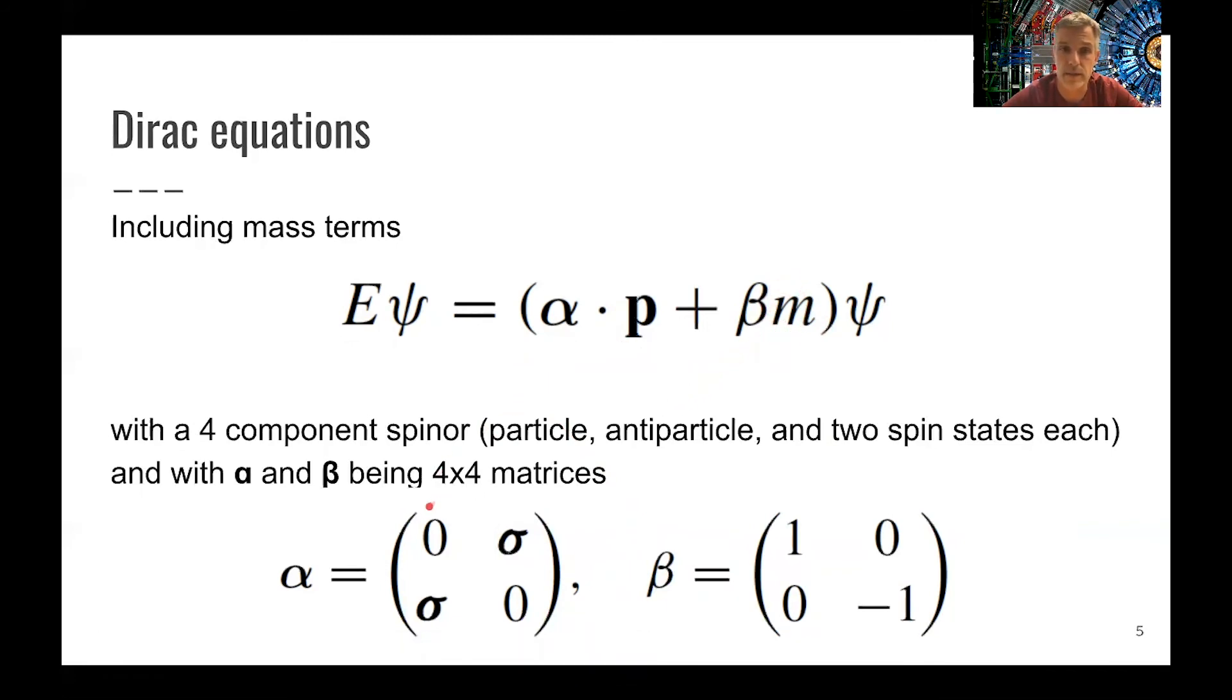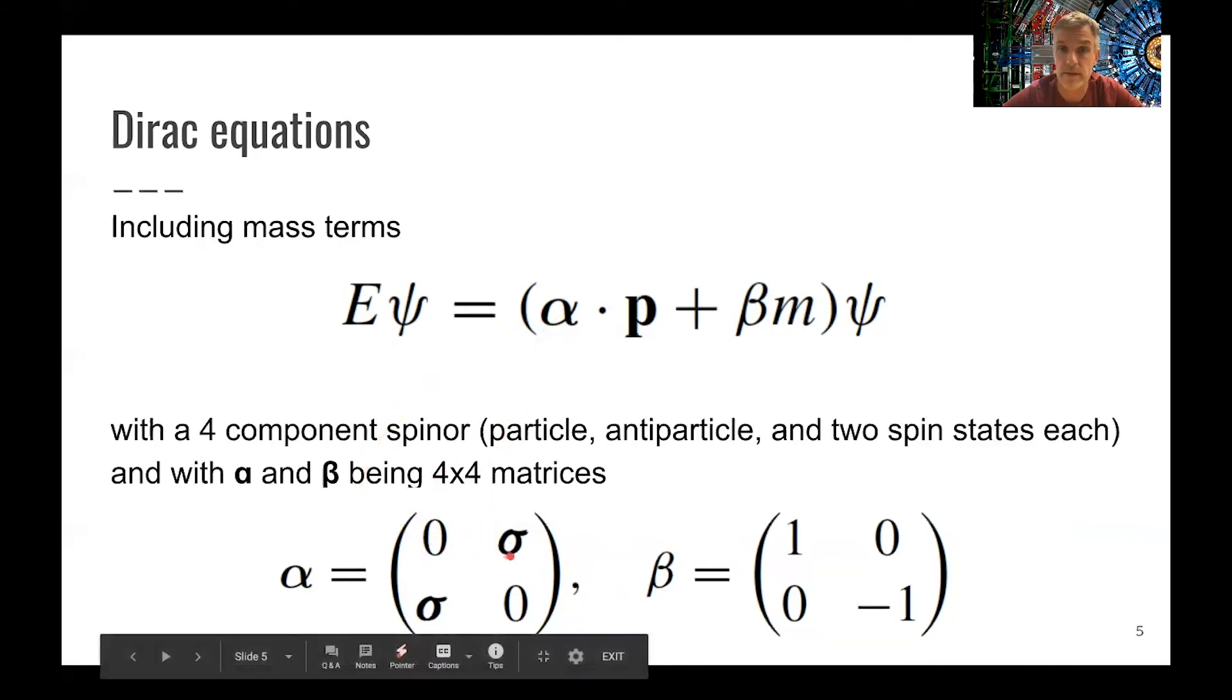So if you try to find the solutions here, you find that alpha is a matrix, four-by-four matrix, which has the sigmas, the Pauli matrices, on the off-diagonal elements. And beta is a diagonal matrix, four-by-four matrix, with identity on the upper two components and minus one on the lower two components.